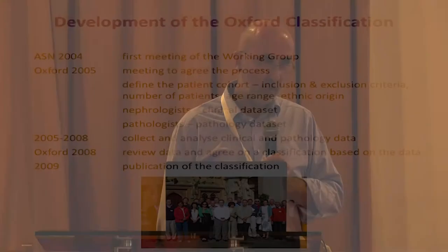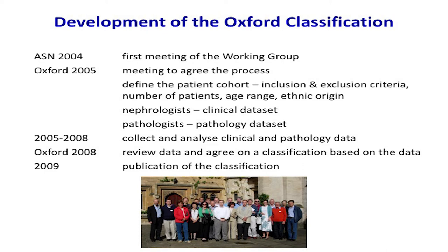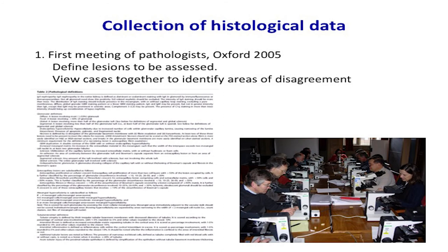If you're going to produce a truly evidence-based classification, it's a lot of work and takes a long time — it was five years between starting the process for IgA nephropathy and publishing the classification. We put a huge amount of effort into getting things right from the start. In our initial meeting in 2005, I got 20 of the most experienced nephropathologists into a room together, gave them a microscope each, and got them to go through the same slides — initially disagreeing and arguing violently — and finally agreeing on the definitions, which there are so many of they're all in small print. But that wasn't good enough.